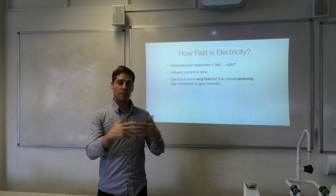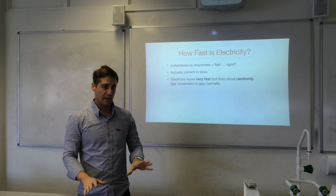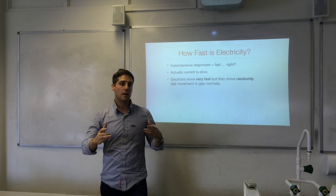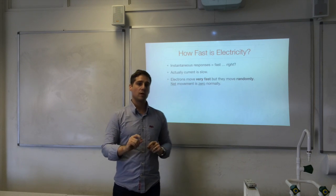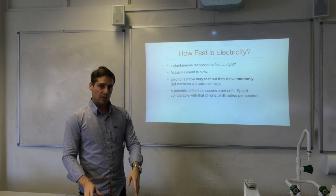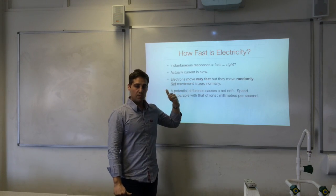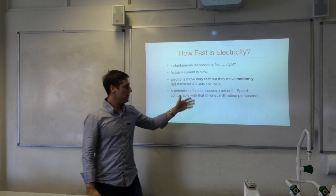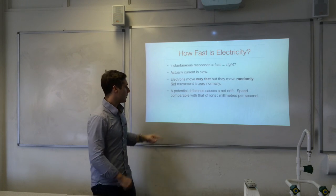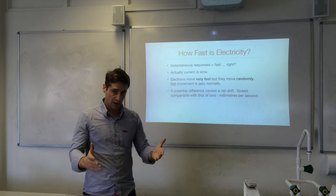When there's no current flowing, electrons move randomly so there's no net movement in one direction. But when I put a potential difference across a wire, the electrons start to drift in one direction. They maintain their random motion, but if you look at a large number of them, there is a net drift in one direction — from negative to positive. We need a potential difference to cause the current. Electrons are moving hundreds of metres per second, but the net drift is only millimetres per second, comparable to the drift of ions in a solution.